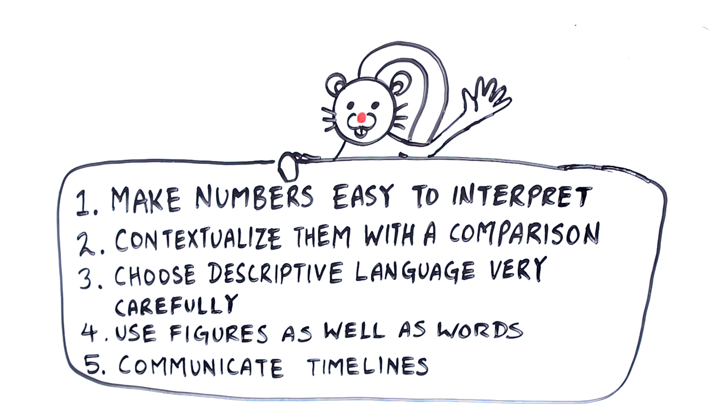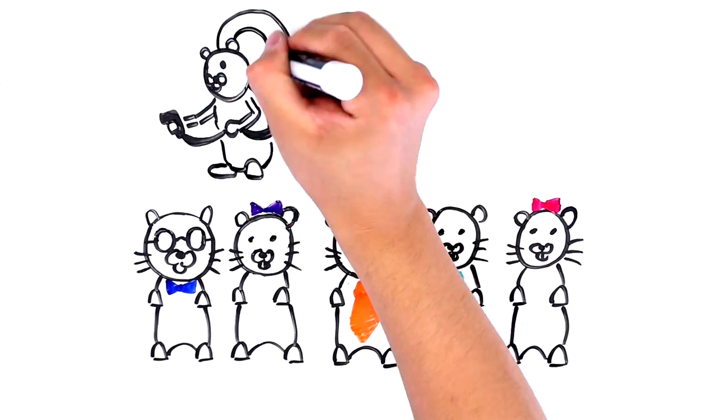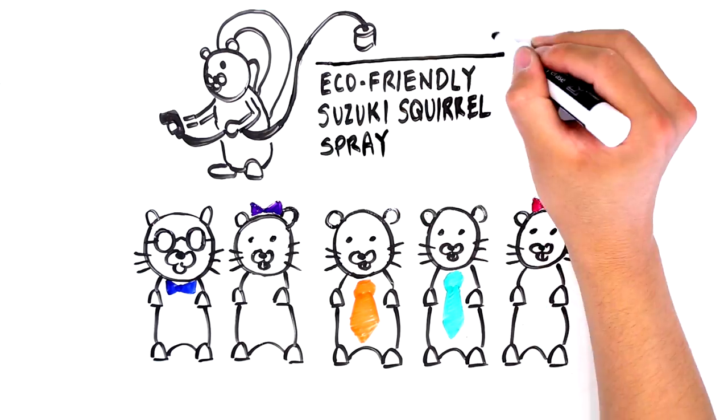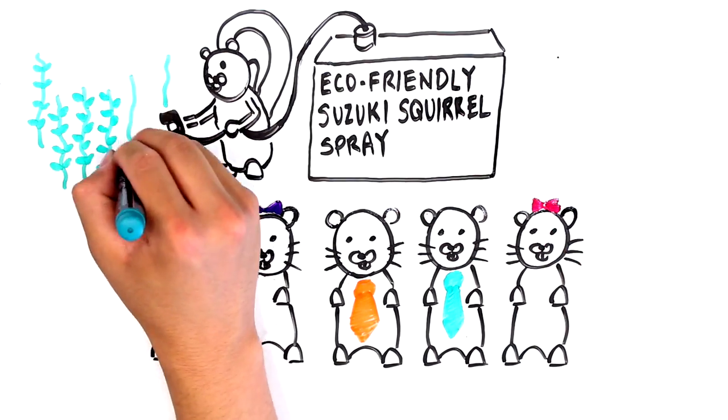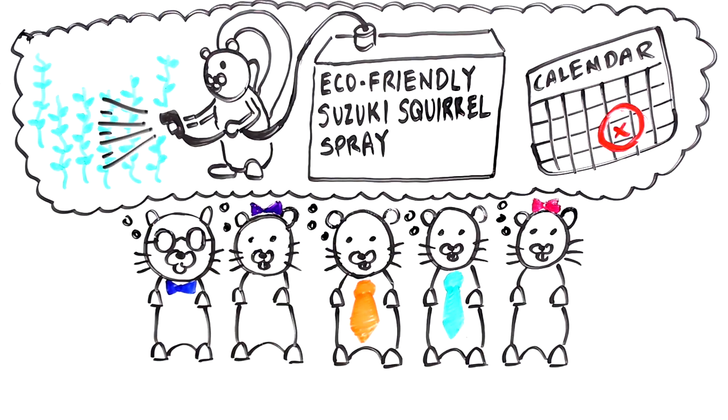And, finally, communicating timelines can help people manage their hopes and fears that are tied up to the uncertainty of something happening. For example, telling the worried squirrels that they would likely know whether the fungus had been controlled by a spray-based fungicide, by the end of the week, when those results were in, would give them a timeline to follow.